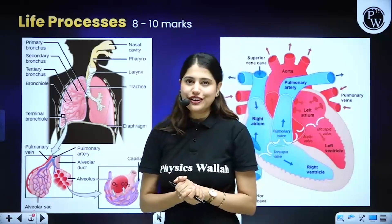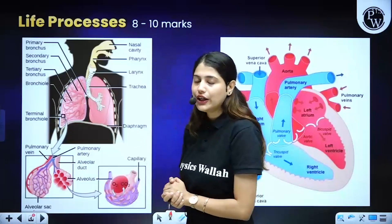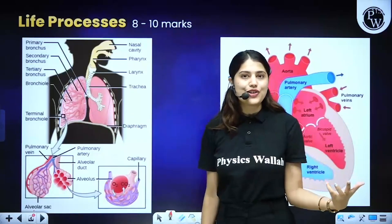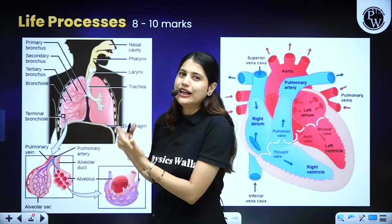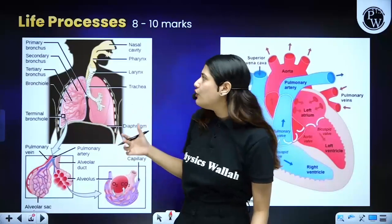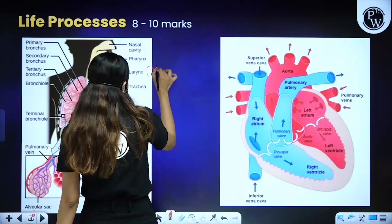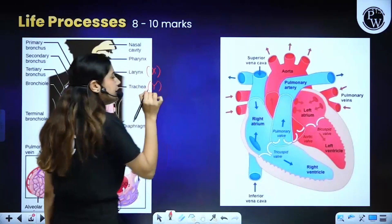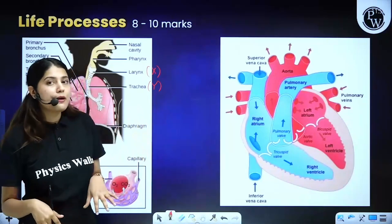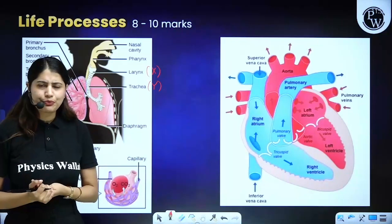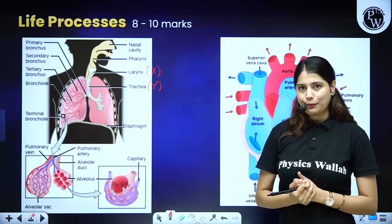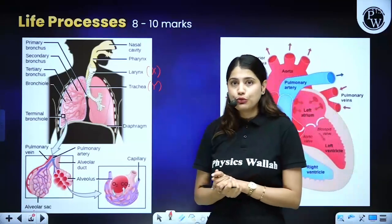The next topic is the human respiratory system — you can see a diagram of it on screen. You cannot miss this because questions can come asking you to draw the diagram or label it. For example, instead of larynx they can give you X, instead of trachea they can give you Y, and ask what is labelled part X or Y, and to write down the functions of each. Different types of questions can come from this individual topic.